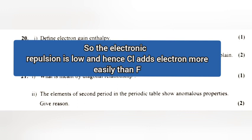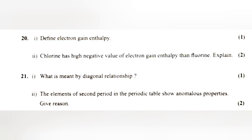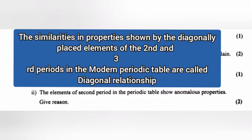But for chlorine, the incoming electron goes to the larger third shell, so the electronic repulsion is low and hence chlorine adds electrons more easily than fluorine. Question 21.1: What is meant by diagonal relationship? Answer: The similarities in properties shown by diagonally placed elements on the second and third periods in the modern periodic table are called diagonal relationship.